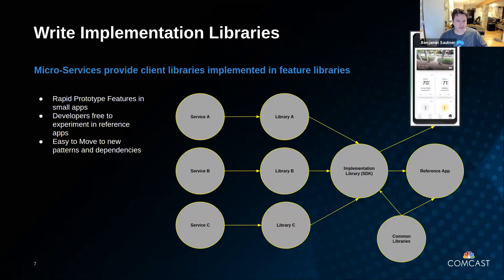The team is working with their implementation library, importing one or more client libraries and talking to microservices. They work quickly on a really small code base. For example, our camera team has a reference app that just shows security cameras — nothing else — so they're completely focused and not worried about tech debt in the extended code base. By design, feature-specific code is isolated in their library. This prevents code from leaking into other features and spaghettifying your app — that's how spaghetti code happens, when people start referencing code they shouldn't because it looks like what they need.